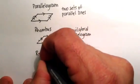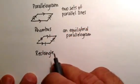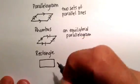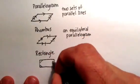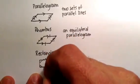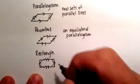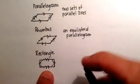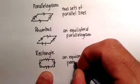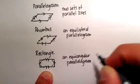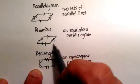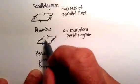Let's go to a rectangle. This is where the definitions start to overlap a lot with one another. A rectangle is an equiangular parallelogram. So with the rhombus we looked at the sides; here we look at the angles. You'll notice that all the angles are equal.